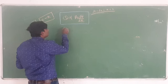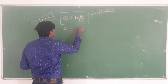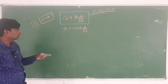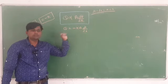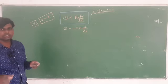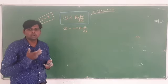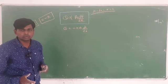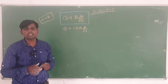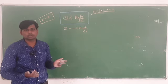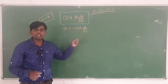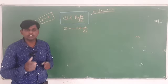So Q equals minus K·A·dT/dx. You can write dT as T2 minus T1, and dx can be written as L. The negative sign is introduced because heat is losing — heat transfer means heat is moving from higher temperature to lower temperature. K stands for thermal conductivity.